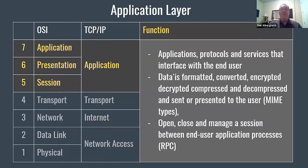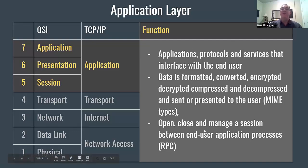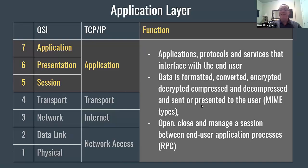At the application layer, the function is providing applications, protocols, and services that interface with the end user — like a web browser using HTTP. At the presentation layer, data is formatted, converted between different formats, encrypted, decrypted, compressed, decompressed, and presented to the user. Think of MIME types for showing different data types in emails.